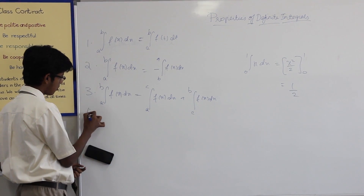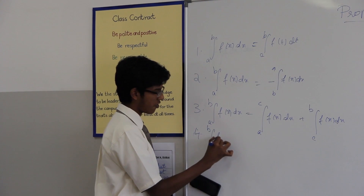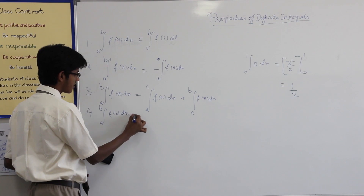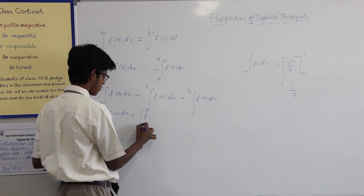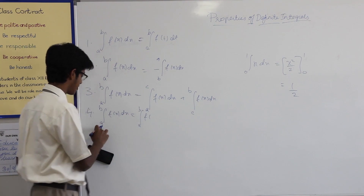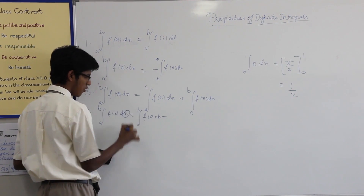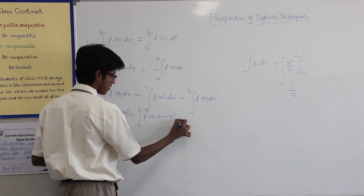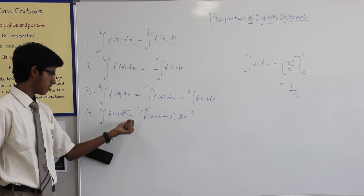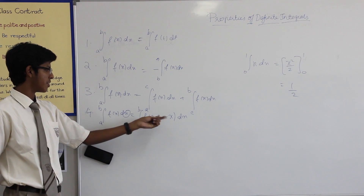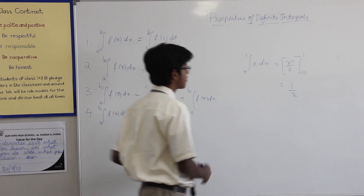The fourth property is: the integral from a to b of f of x dx can be written as the integral of f of the sum of limits minus the variable, that is f of (a plus b minus x) dx. So the integral of f of x dx equals the integral of f of (a plus b minus x) dx, where a plus b is the sum of limits.